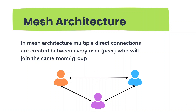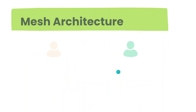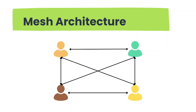When there are four users, you can see the number of direct connections increases. Earlier, each user had two direct connections, but now each user has three. As the number of users grows, the number of direct connections also grows — and that is why mesh architecture is going to be very CPU-intensive. This is not a very scalable solution.